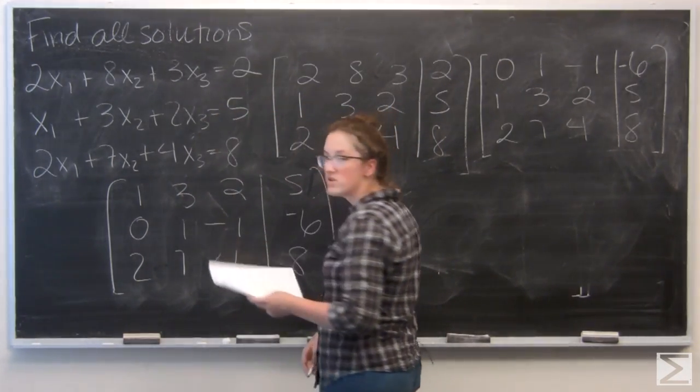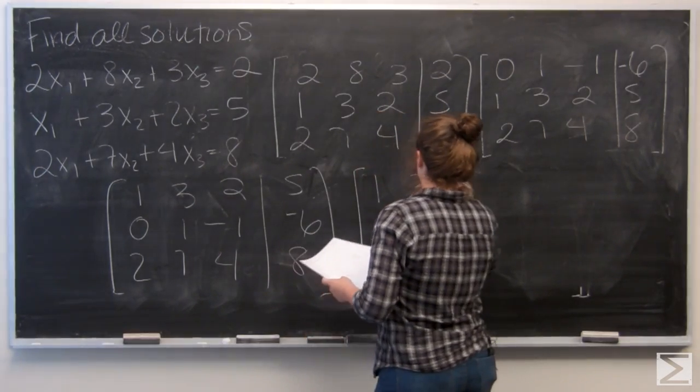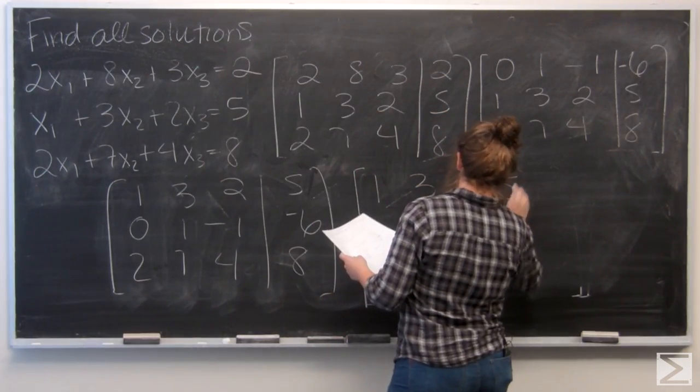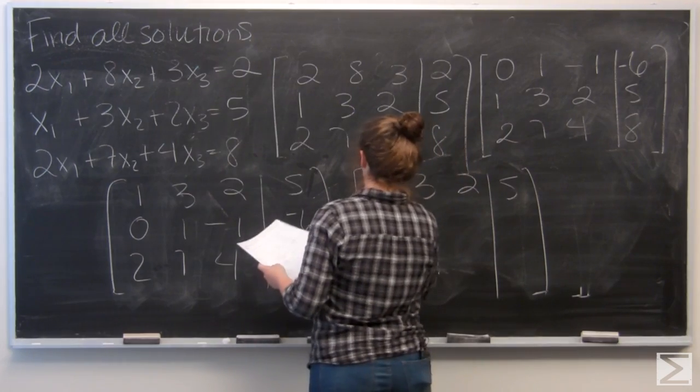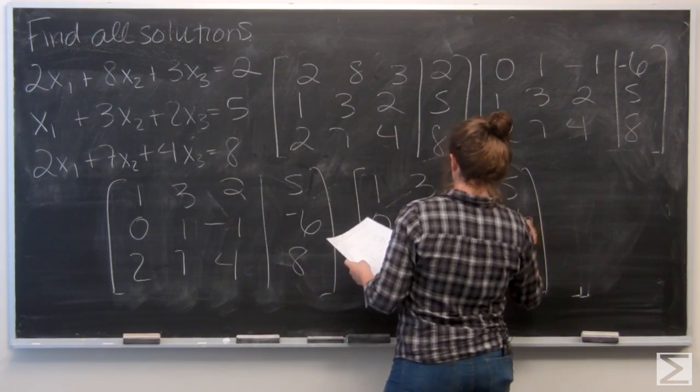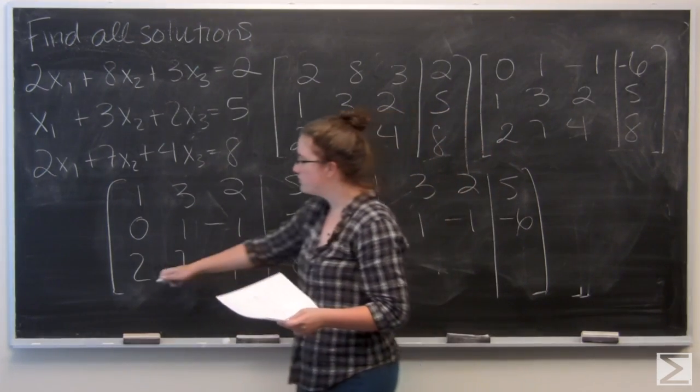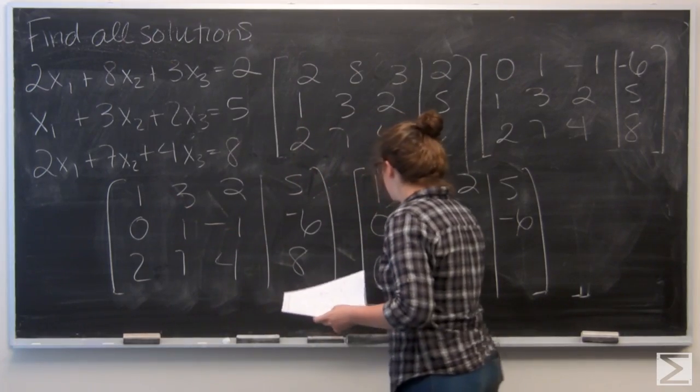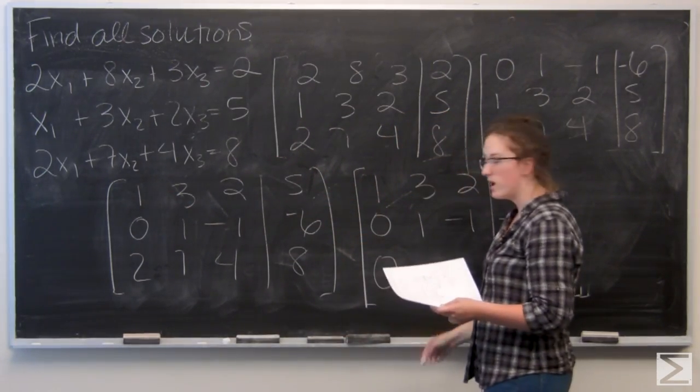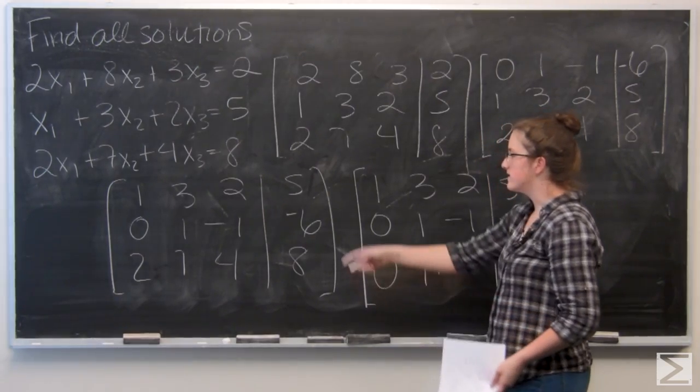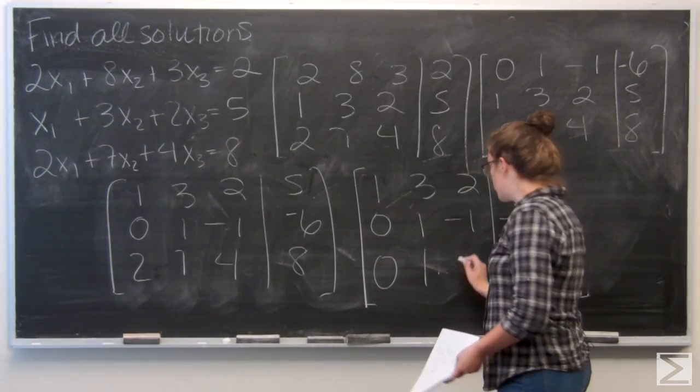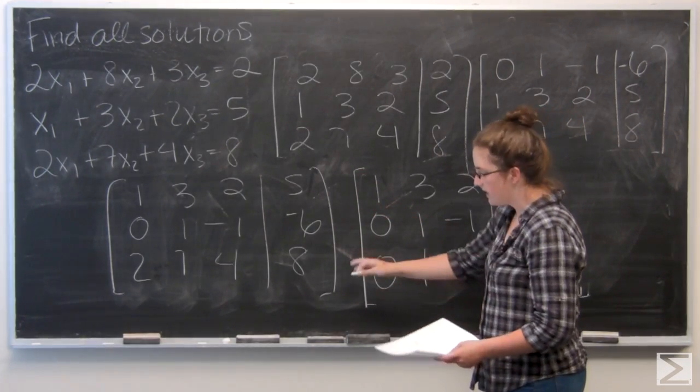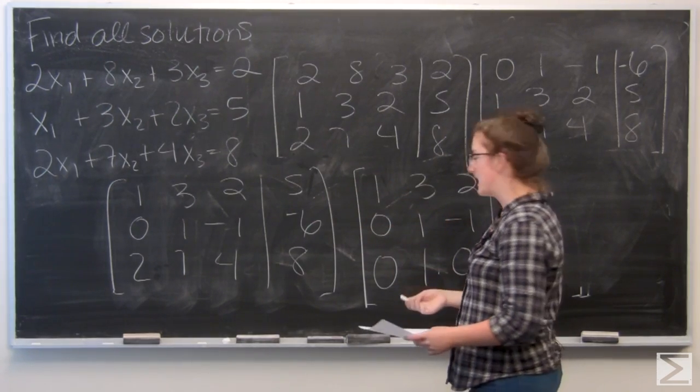So let's go ahead and carry the first two rows over. And now I have 2 minus 2 gives me 0. 7 minus 6 is going to give me 1. And 4 minus 4 is going to give me 0, 8 minus 10 gives me negative 2.